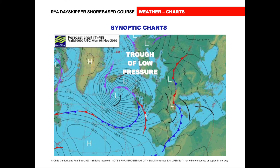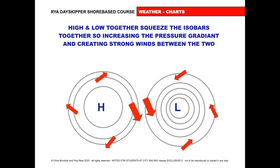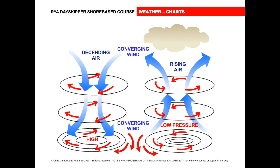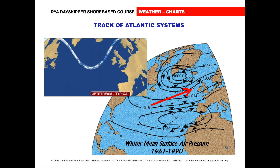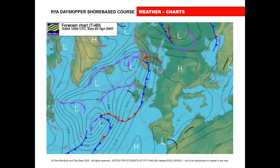And we can see here the warm front, the cold front, the occluded front, and the air goes anti-clockwise around here, blowing slightly in. We can see these isobars are really close together, which shows it's windy. So high and low together squeeze the isobars together, increasing the pressure gradient and creating strong winds between the two. So we get a high and a low squeezing together — where they join, we get higher winds. Rising air, descending air, where they're converging, the converging wind will accelerate the wind. So stronger wind between high and low pressure. The track of the Atlantic systems comes across the jet stream. The jet stream is on the polar front, which is between the polar cell and the Ferrel cell. And if you look at the weather map, sometimes we'll see this dotted line — this dotted line represents the jet stream.